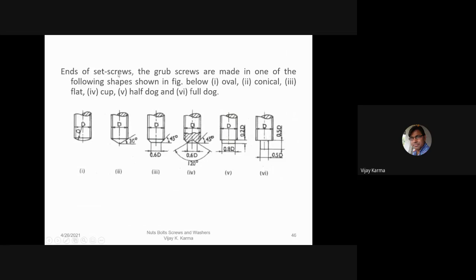The ends of set screws (grub screws) are made in one of the following shapes: oval, conical, flat, cup, half dog, and full dog.